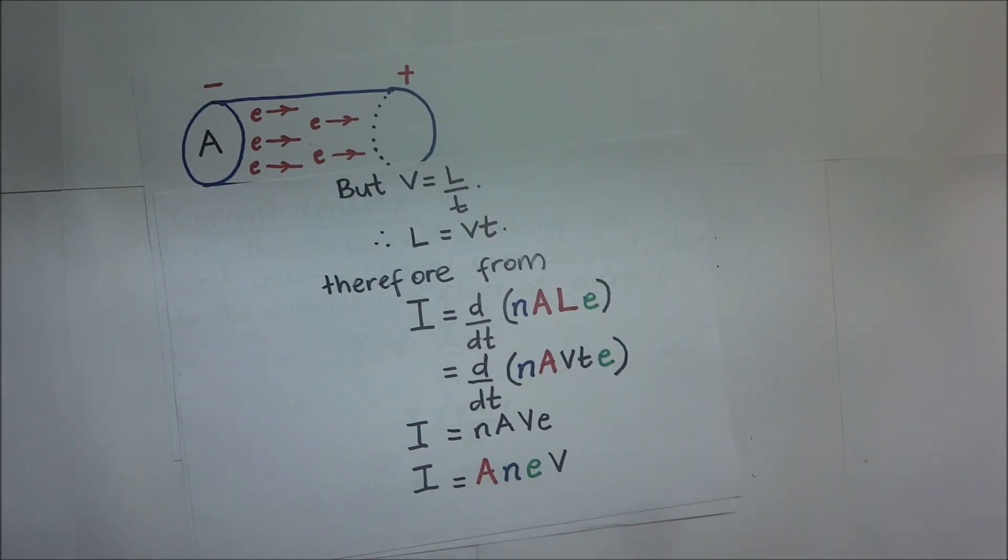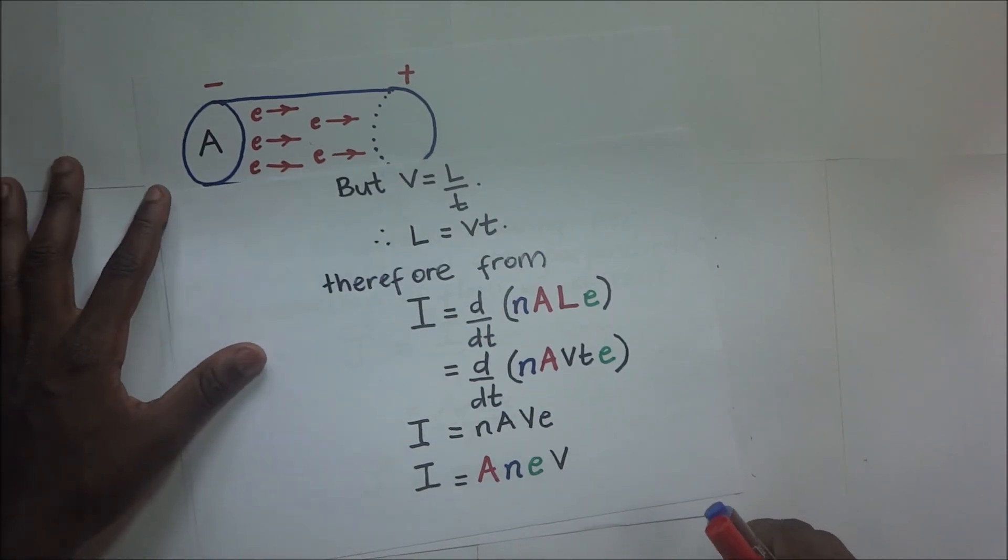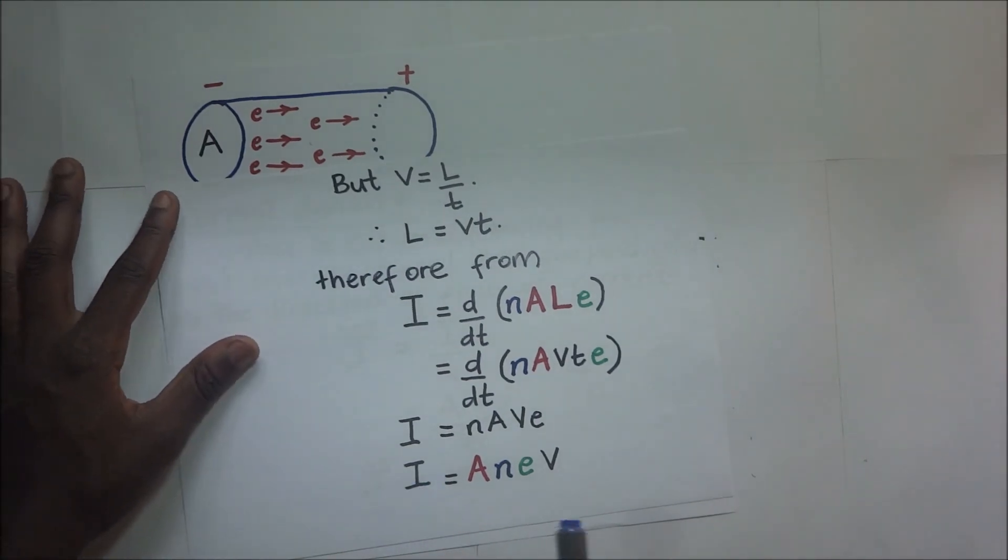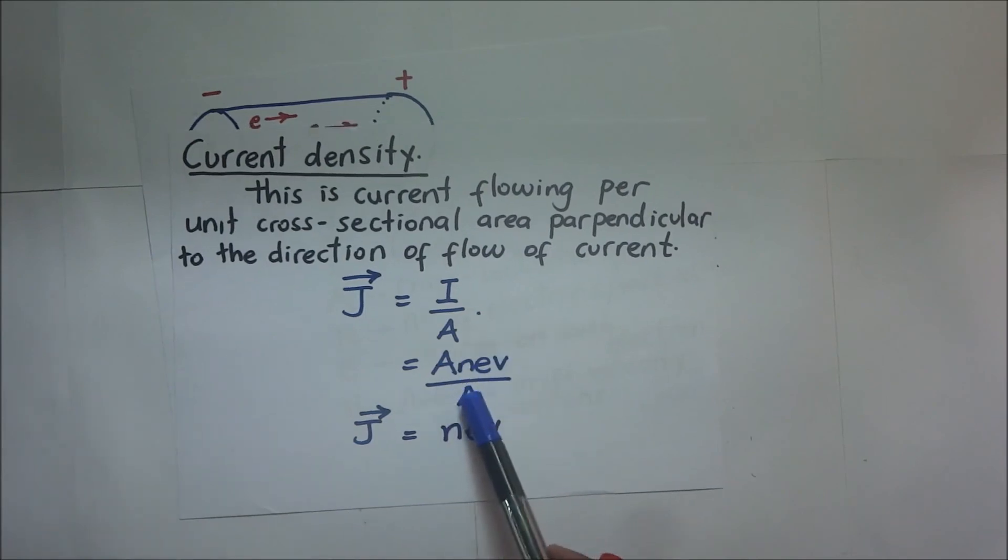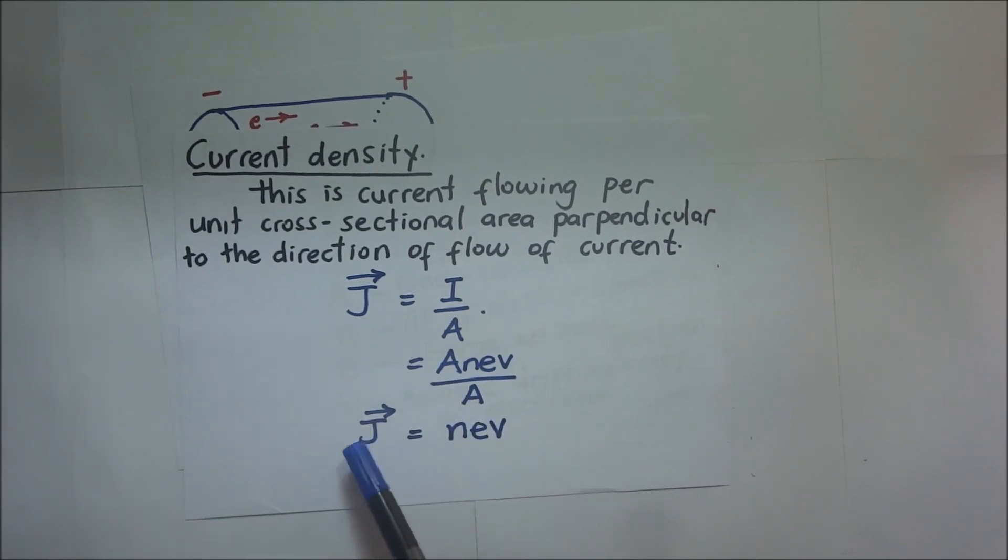And if we may take it a bit further, if we want to find the current density, it is going to be I over A. I over A, which is NAVE over A, the A's disappear, and that's how we can end up with current density being equal to J, which is NEV.